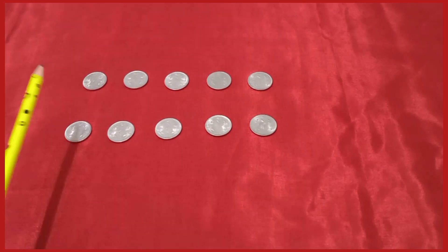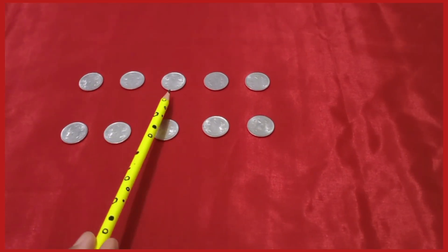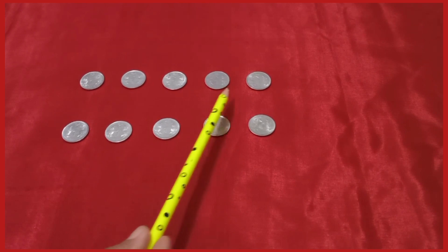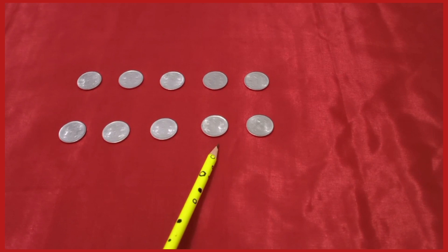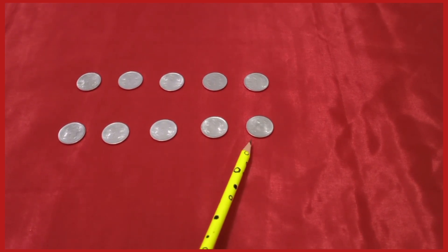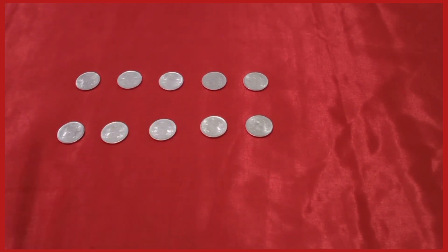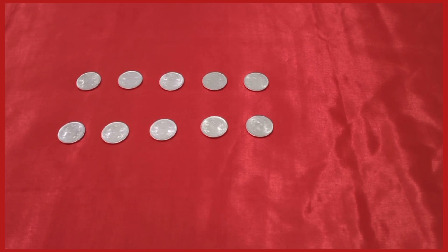It's 1, 2, 3, 4, 5, 6, 7, 8, 9, and 10. So dear students, how many coins of 1 rupee do we have?